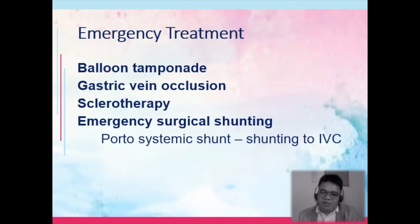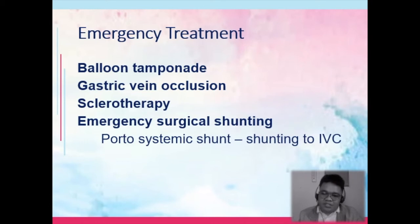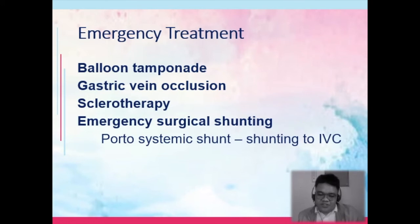There may be emergency surgical shunting, such as a portosystemic shunt. A shunt is an artificial passageway. To relieve portal hypertension, a shunt is created between the portal vein and the inferior vena cava, allowing drainage of venous blood from the portal circulation toward the inferior vena cava.